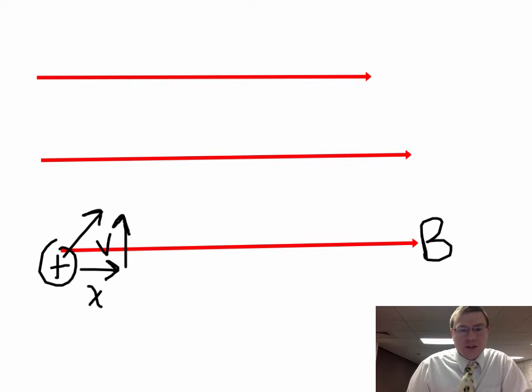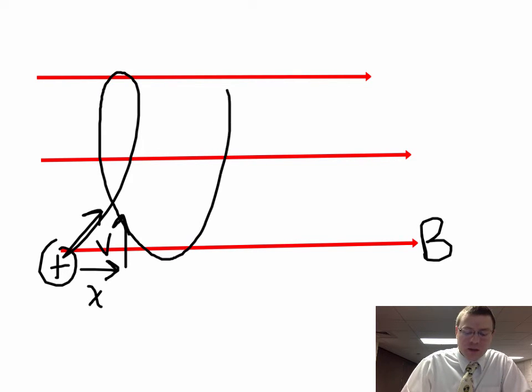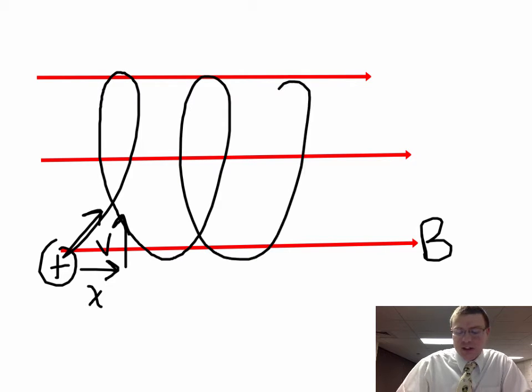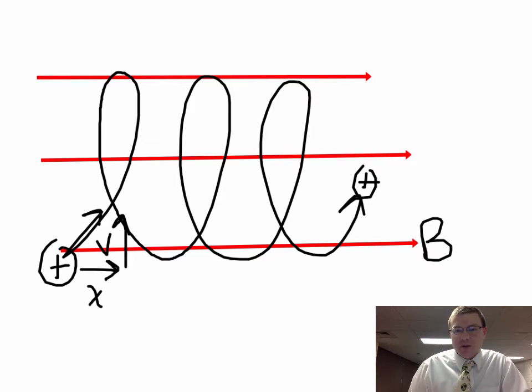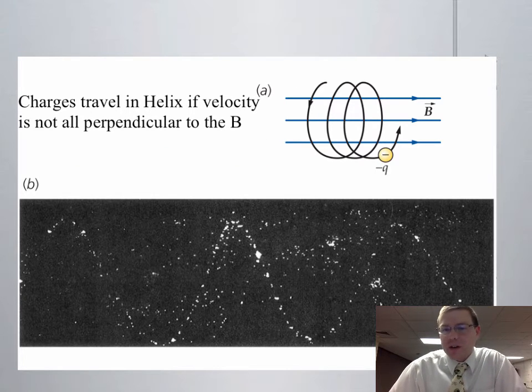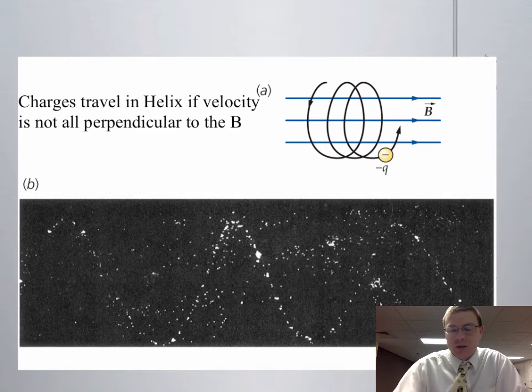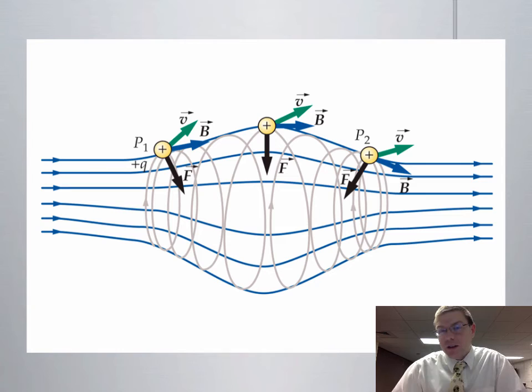So the only one that does affect it is the velocity that is going perpendicular to that field. The horizontal x speed is going to remain constant, but the y speed is going to cause the centripetal force. So the charge is going to go in a circle, but the whole circle is going to shift. And if you keep that going, you create this helix shape as the charge moves through the magnetic field.